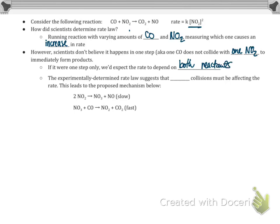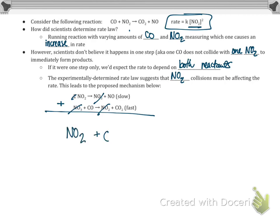The experimentally determined rate law suggests that NO2 collisions must be affecting the rate. This leads scientists to propose a mechanism: two NO2 molecules collide with each other slowly to create some products, and those products then collide with CO quickly to produce more products. If we add these two reactions together, one NO2 cancels with one NO2, the NO3's cancel, and we're left with NO2 plus CO yielding the products — which matches the overall reaction written above. So this is a valid mechanism.